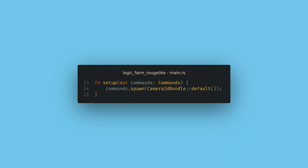When we call `commands.spawn` with this bundle, we're telling Bevy to create one entity and associate one copy of each of these components to that entity. An important fundamental rule of ECS is that each entity can only have one copy of each component associated with it, and we'll get ways of working within that restriction as we go on.